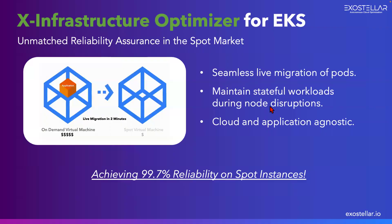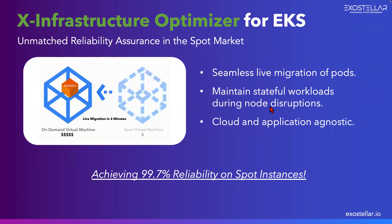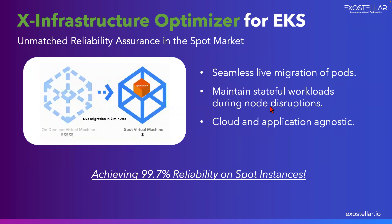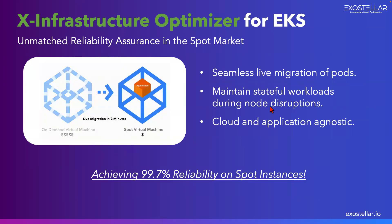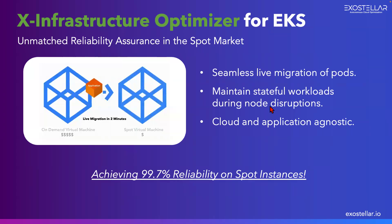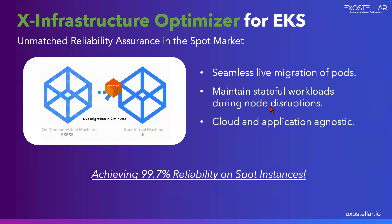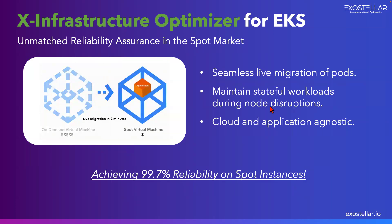The product is called the X Infrastructure Optimizer. We're going to use Amazon EKS as an example since it's so popular. As you can see from the animation, you can live migrate one application or workload from one instance to another instance, or move it back.